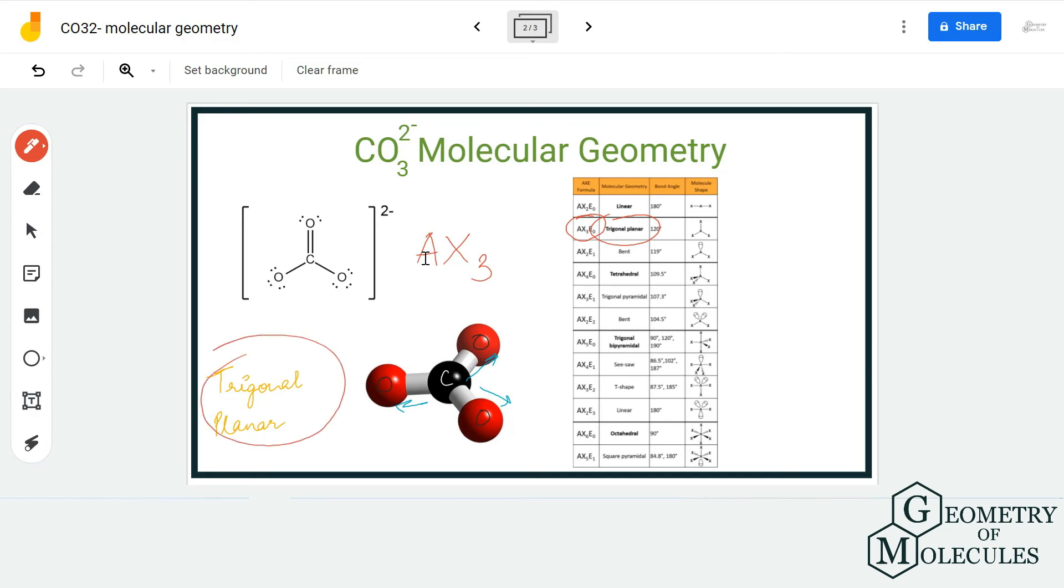This is quite evident even if you look at its 3D structure, and the bond angles are 120 degrees. So the bond angle between these will be 120 degrees. I hope this video helps you to understand the molecular geometry of CO3 2- ion.